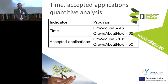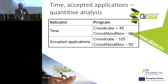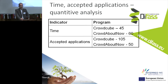Here we have time and accepted applications — this is the quantitative analysis. The first indicator is time. In the case of Crowdcube there are 45 days, and in the case of Crowdabout Now it is a maximum of 60 days for approval of applications. So we can say that Crowdcube is a little faster. When talking about accepted applications, we have over 100 applications for Crowdcube and 50 applications for Crowdabout Now.